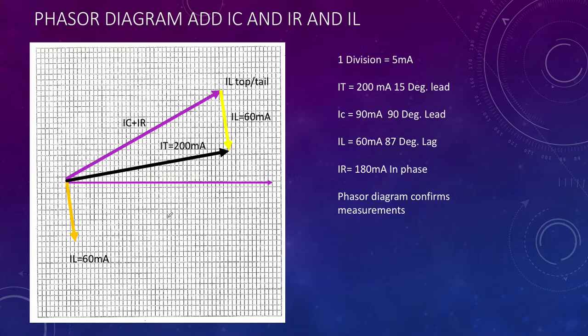We've taken the 60 milliamps for the inductor current, we've tip to tailed it with the addition of IC and IR which was the purple one, bringing us to this point. If we then go from the origin and draw the black phasor, that gives us I total. If you scale that off it comes very close to 200 milliamps which was our total.